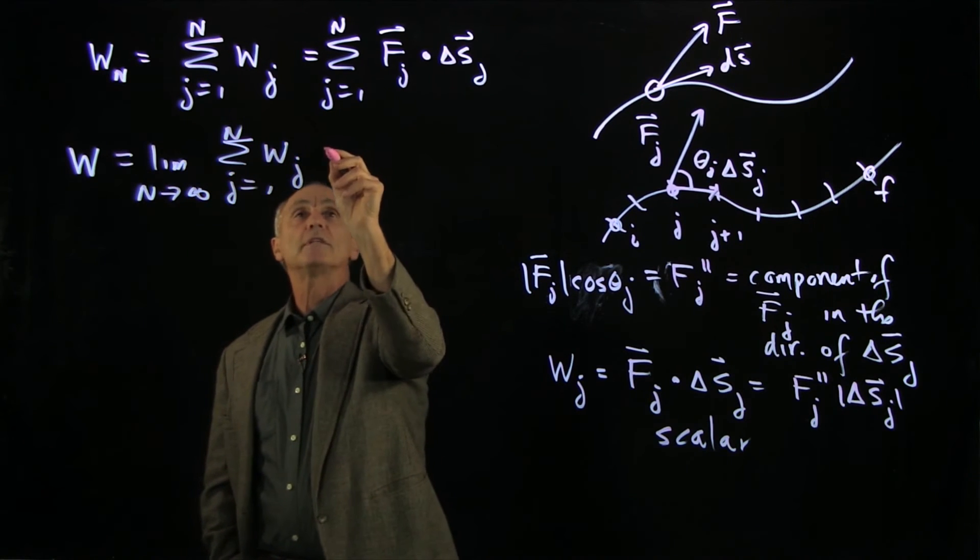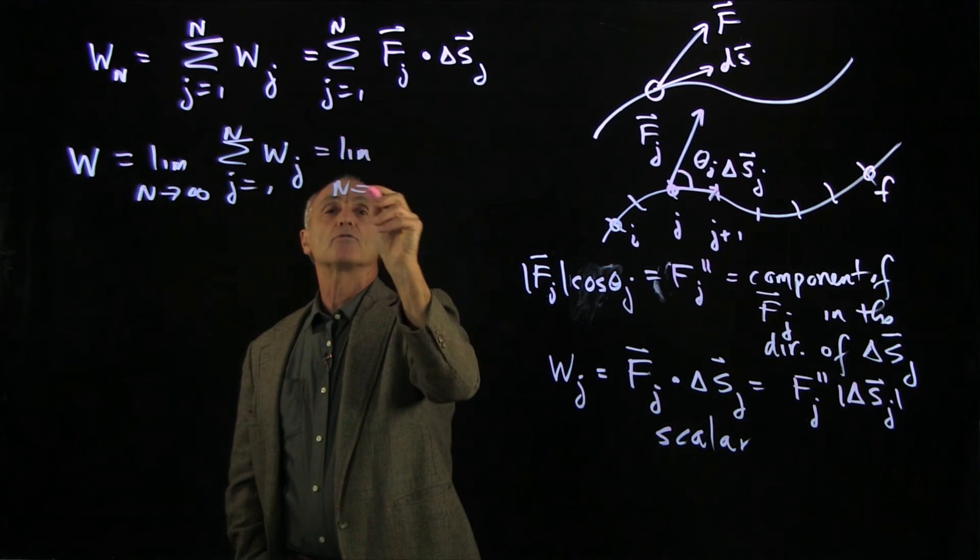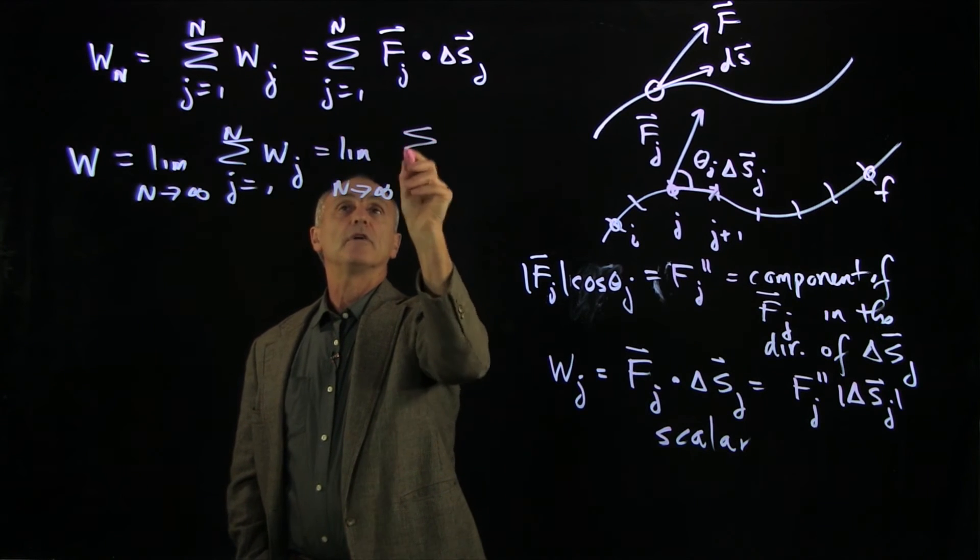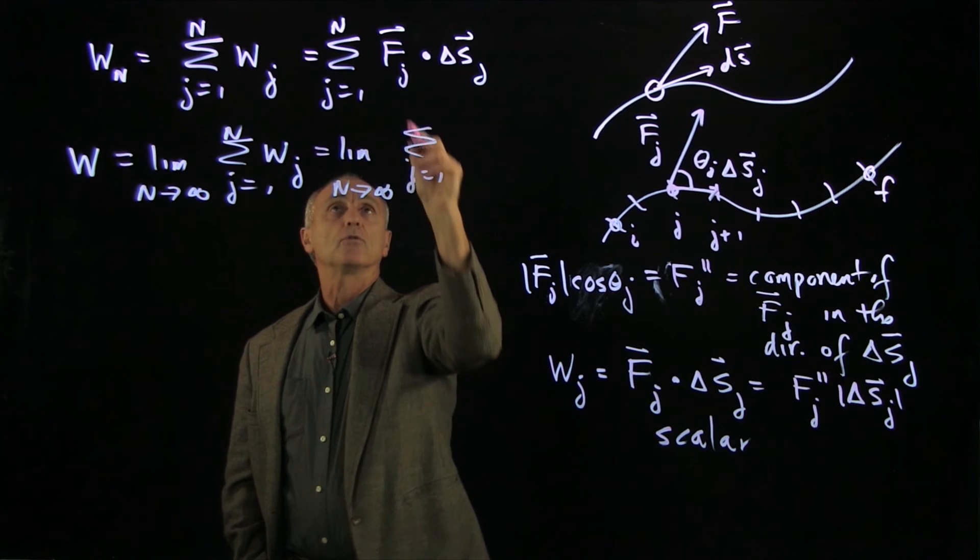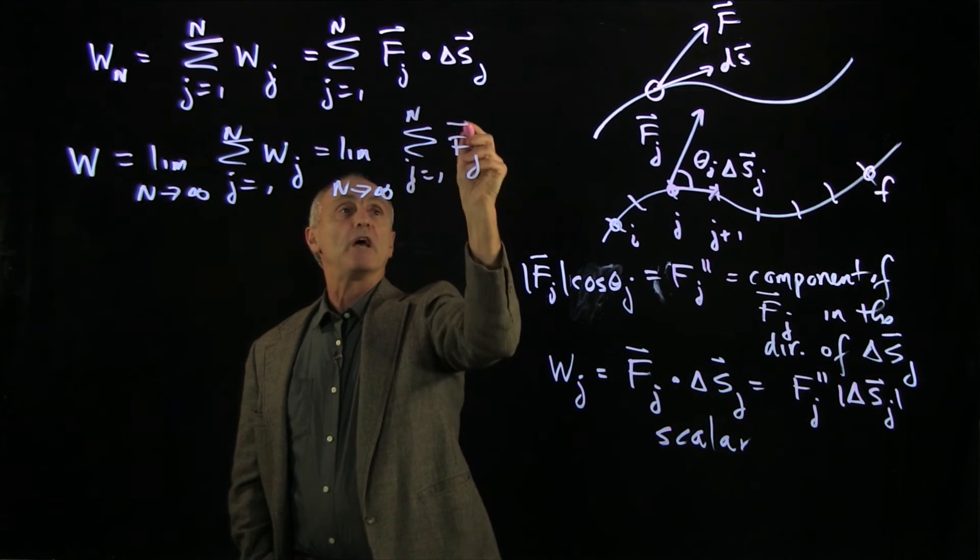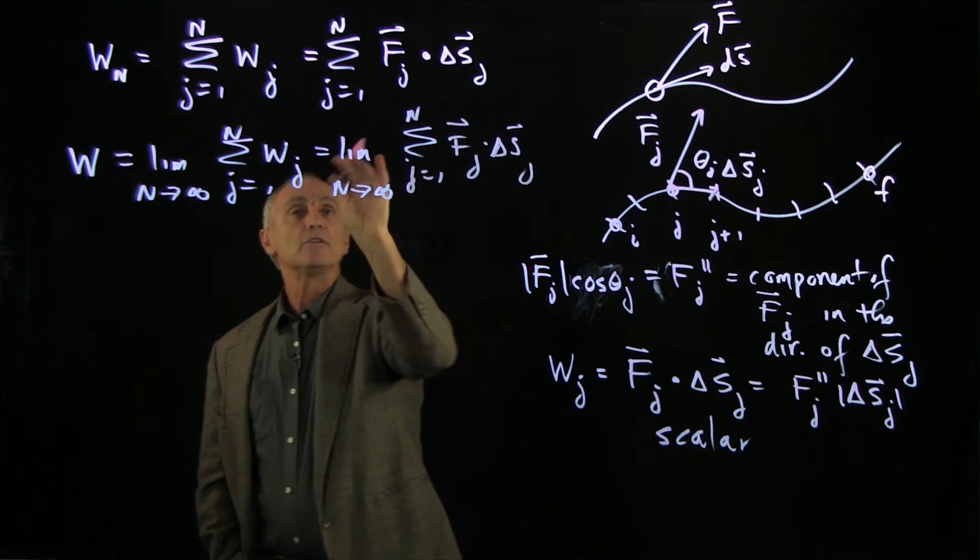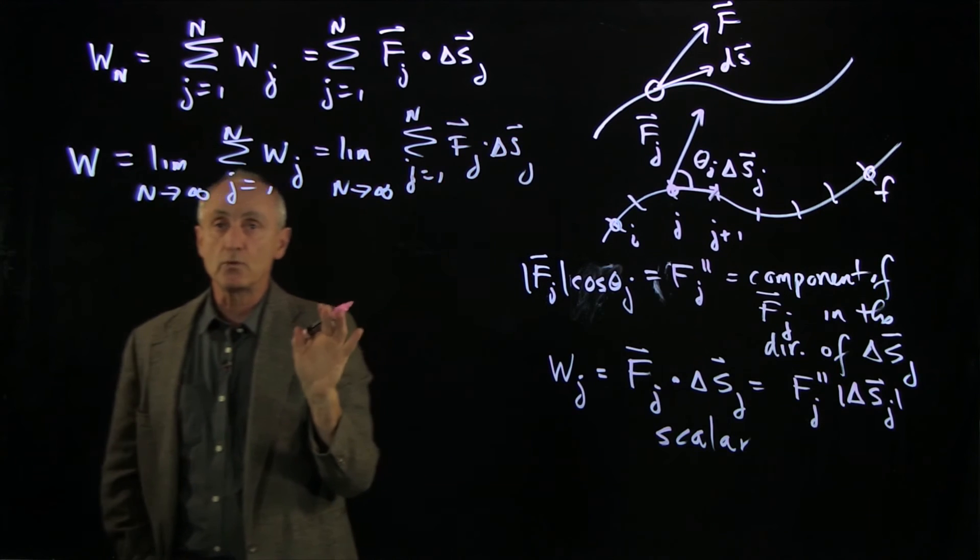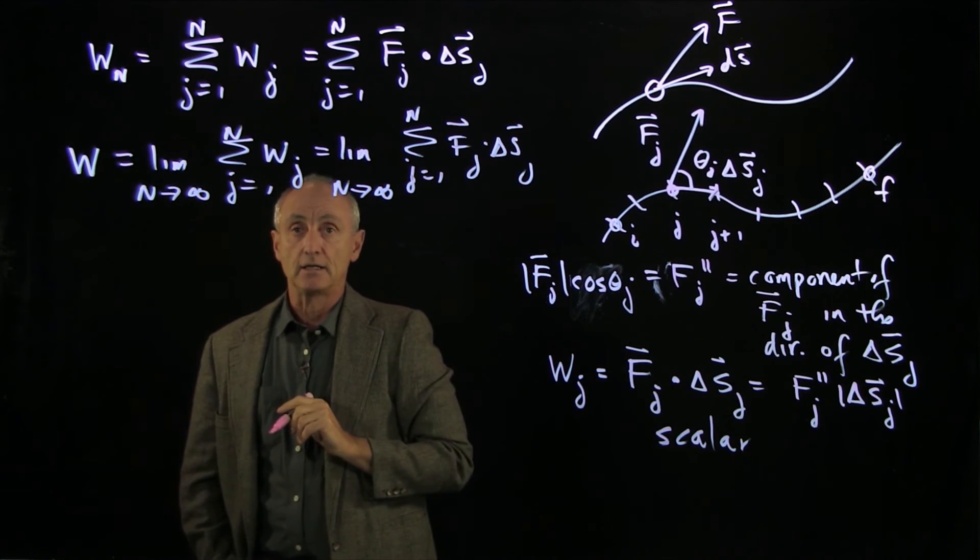Now, when we take that limit as n goes to infinity of this sum, j equals 1 to n of Fj dot delta sj, this quantity is formally what we mean by a line integral.